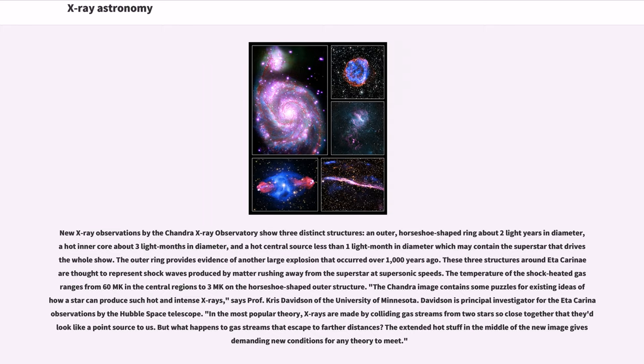New X-ray observations by the Chandra X-ray Observatory show three distinct structures around Eta Carinae: an outer horseshoe-shaped ring about two light years in diameter, a hot inner core about three light months in diameter, and a hot central source less than one light month in diameter. The temperature of the shock heated gas ranges from 60 MK in the central regions to 3 MK on the horseshoe-shaped outer structure. The Chandra image contains some puzzles for existing ideas of how a star can produce such hot and intense X-rays.